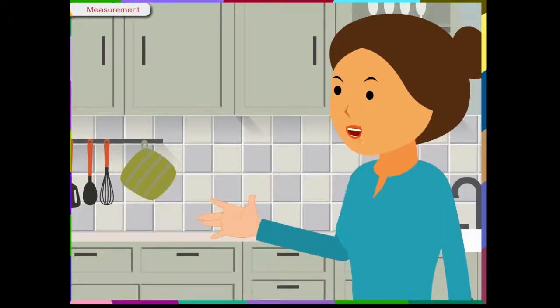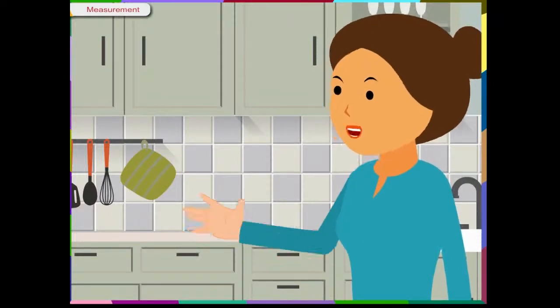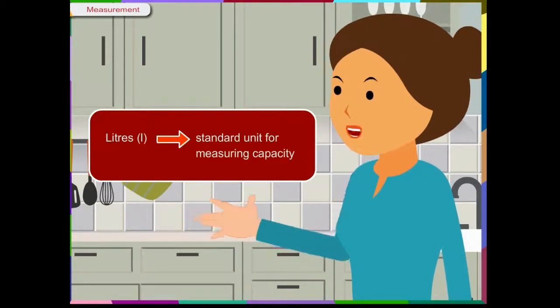Smaller quantities of liquid are measured in millilitres and we write ml in short. For example, the injection syringe has a capacity of 10 ml. Larger quantities of liquid are measured in litres and we write L in short. Litre is also the standard measurement of capacity.